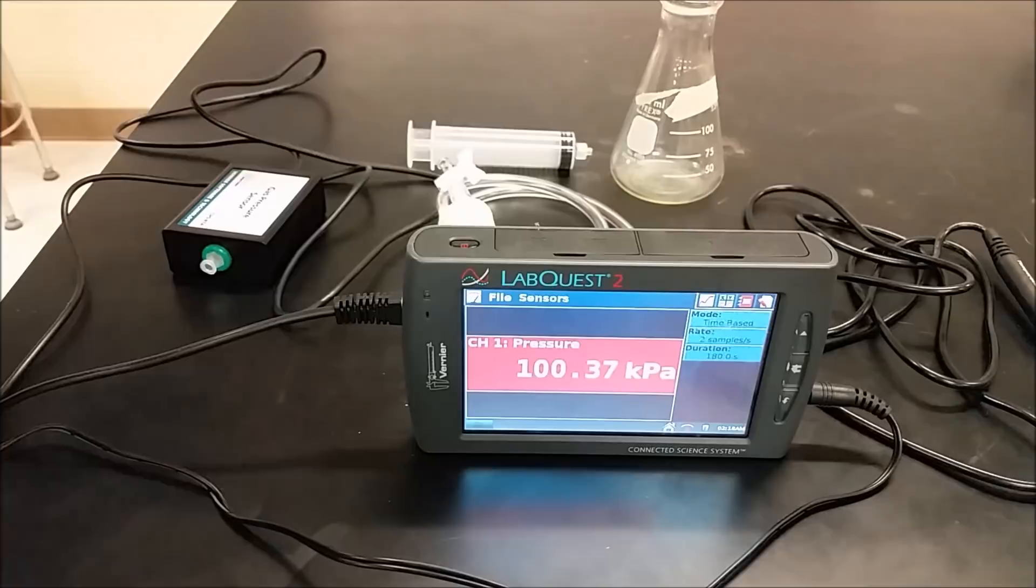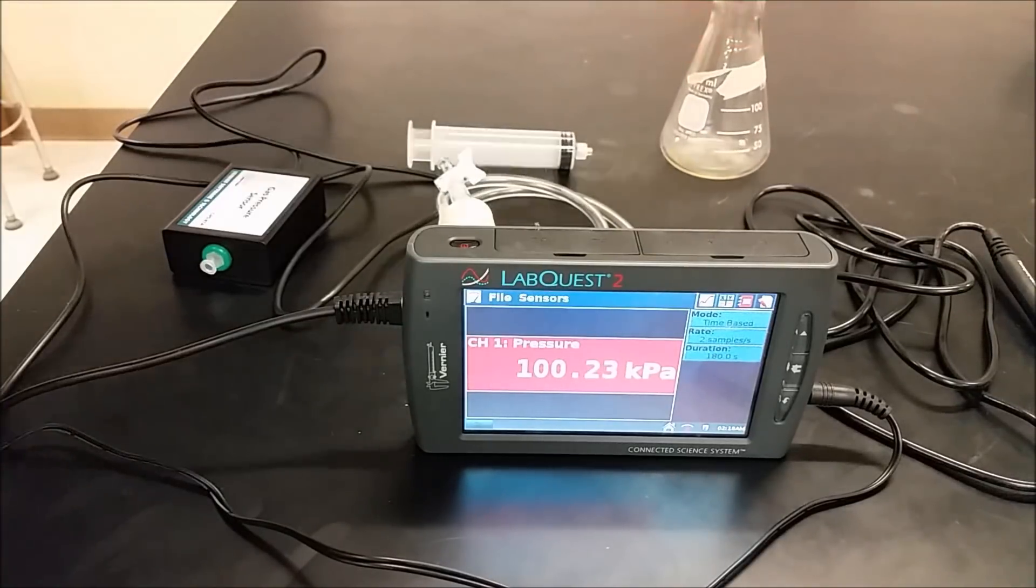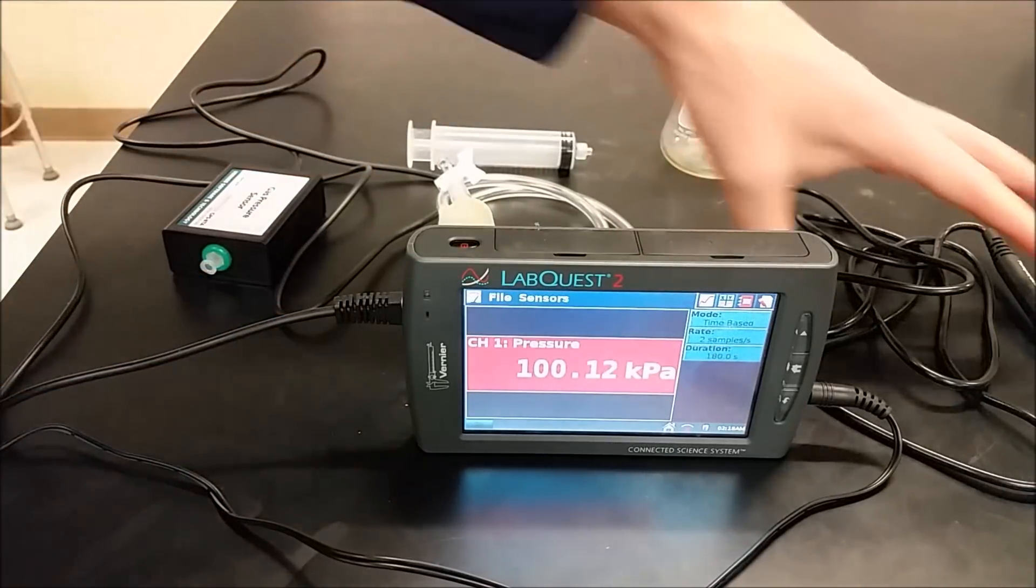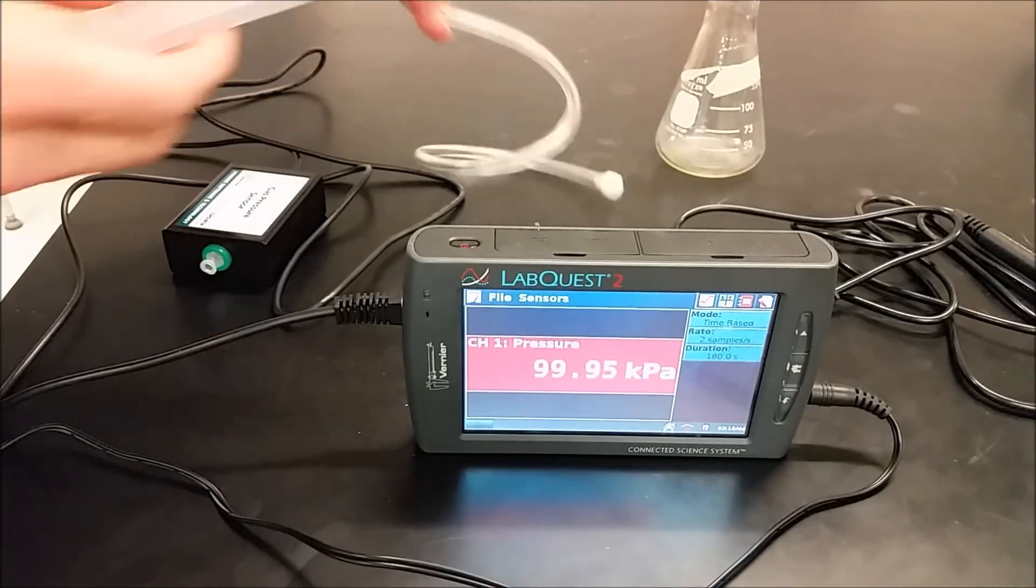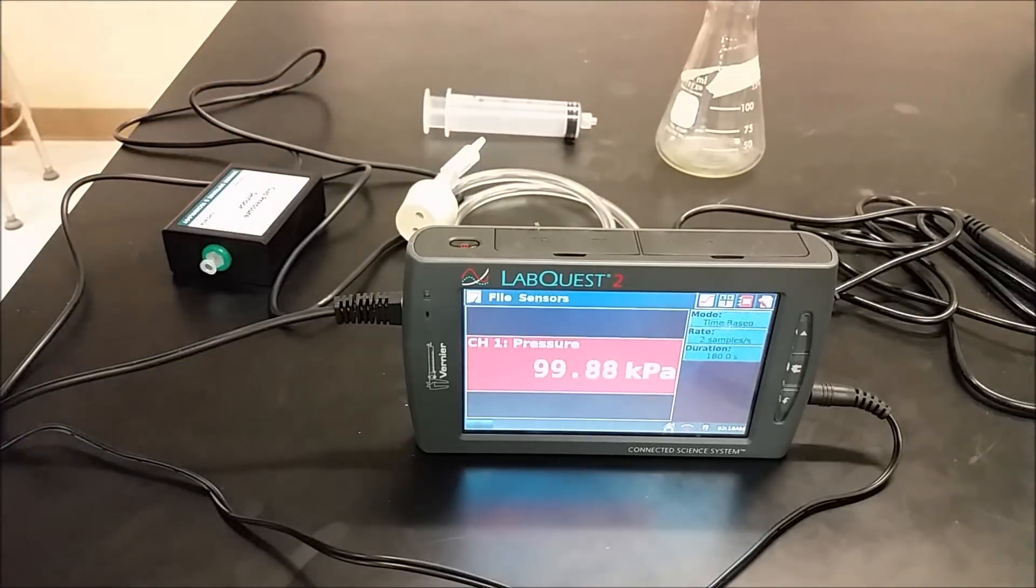Alright, so the first start of the setup here, you're going to have an Erlenmeyer flask, a gas pressure sensor, your LabQuest, a temperature sensor, this apparatus, and a syringe. You're not going to use all of these in all the different parts.